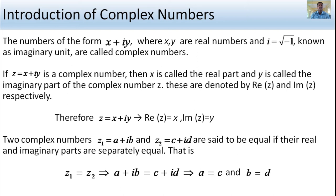If z1 equals z2, then a plus ib equals c plus id, which means a equals c and b equals d — the real parts are equal and the imaginary parts are equal.